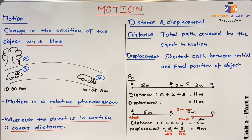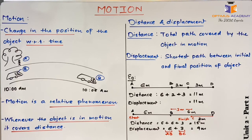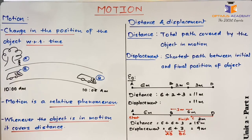Motion is a relative phenomenon. To explain motion, you have to consider a standard frame of reference — in simple words, a standard position. To explain that another object is in motion or not, you have to consider your own position to be stable or steady. For example, at 10 a.m. Person A was standing near the tree, and at 10:05 a.m. Person A is still standing near the tree, but the car is now not in front of Person A, so he would say the car was in motion. And he is correct.